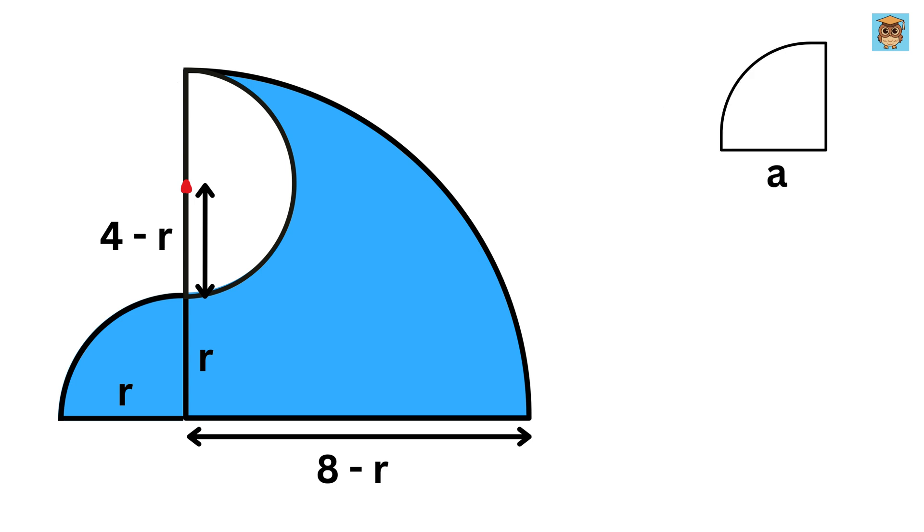If the radius of the quarter circle is a, then its area is pi a square over 4. And if the radius of the semicircle is b, then its area is pi b square over 2.